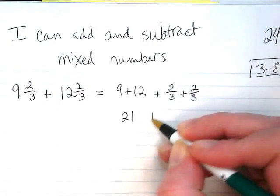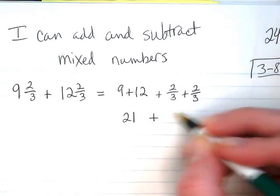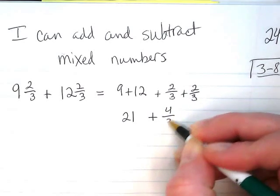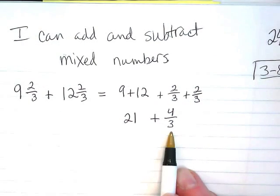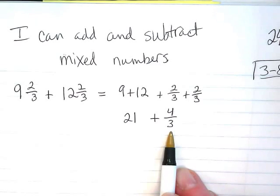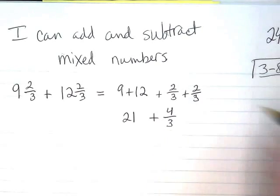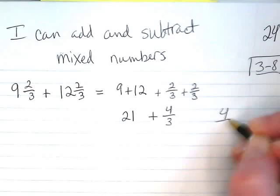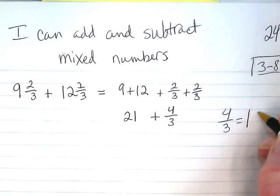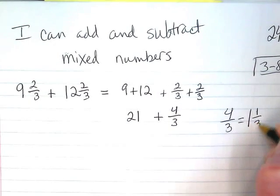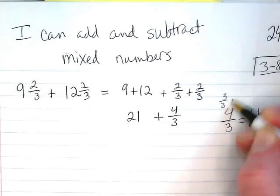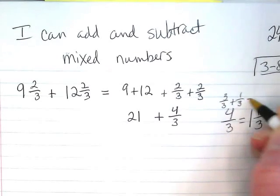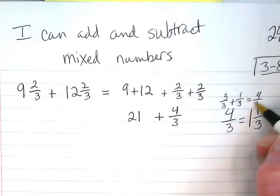Plus 2 thirds plus 2 thirds would be 4 thirds. Well, 4 thirds is an improper fraction, and it can be rewritten as 1 and 1 third. Because if I take the 3 thirds plus the 1 third, that gives me 4 thirds.